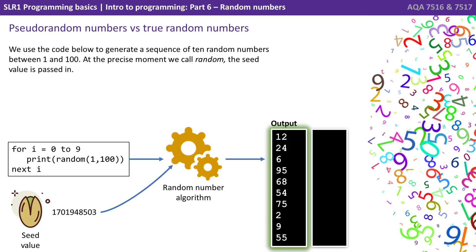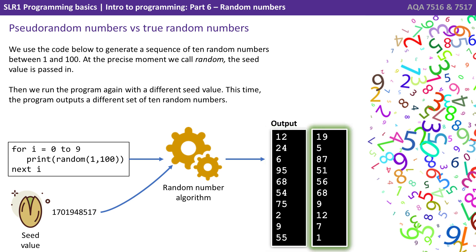We use the code below to generate a sequence of 10 random numbers between 1 and 100. But at the precise moment we call random, the seed value is passed in. Then we run the program again, but this time it obviously uses a different seed value. So this time the program outputs a different set of 10 random numbers.